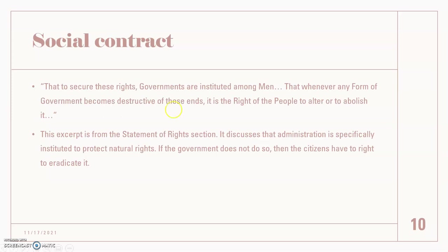Social contracts — another important value. The quote states: 'To secure these rights, governments are instituted among men, and whenever any form of government becomes destructive of these ends, it is the right of the people to alter or to abolish it.' This is taken from the Statement of Rights section. It talks about how the whole purpose of government is to protect natural rights of the citizens, and if the government fails to do that, then the citizens have the right to overthrow it.